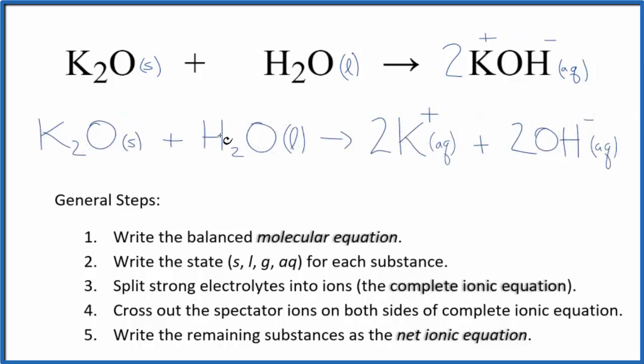So this is the complete or total ionic equation. Now we would cross out the spectator ions that appear on both sides. The thing is that everything is unique on each side. So the complete ionic equation here is the same as the net ionic equation. There's no spectator ions to cross out.